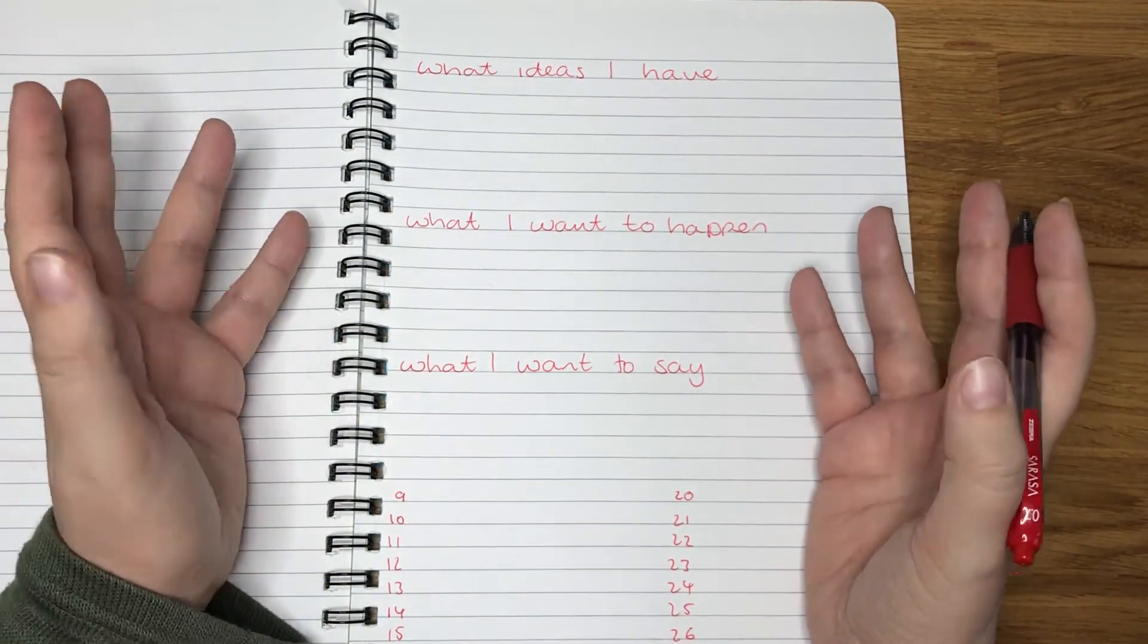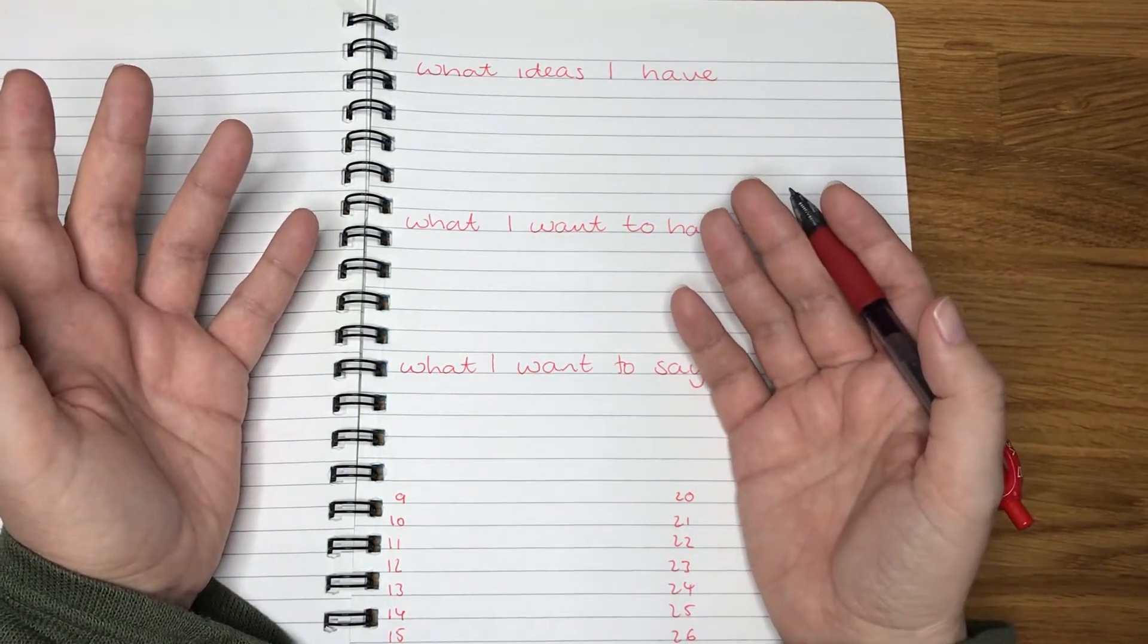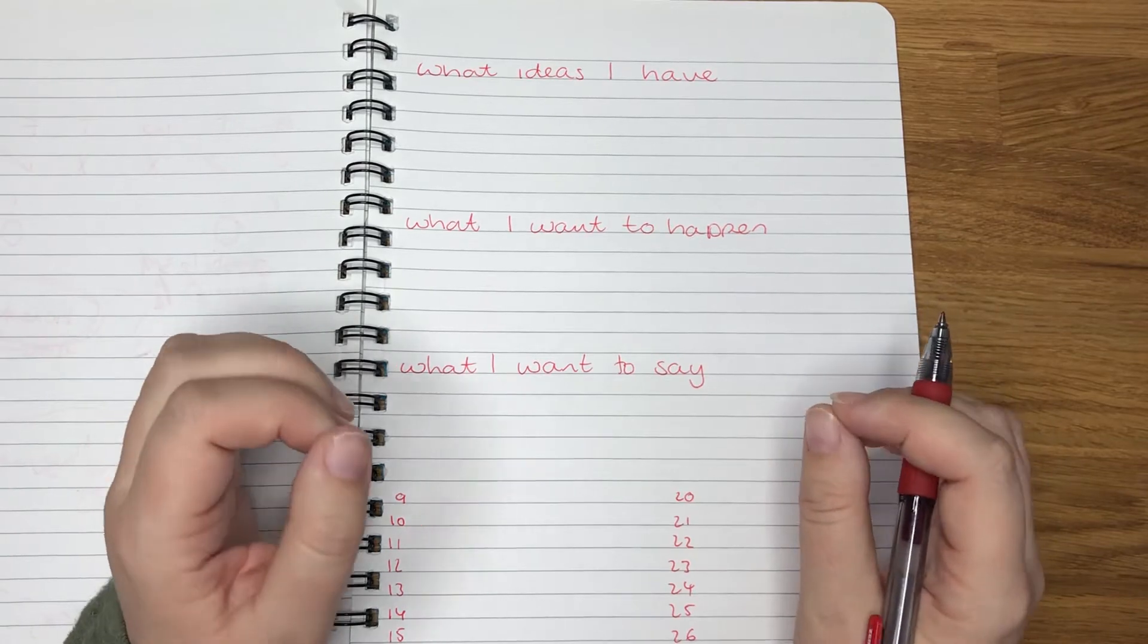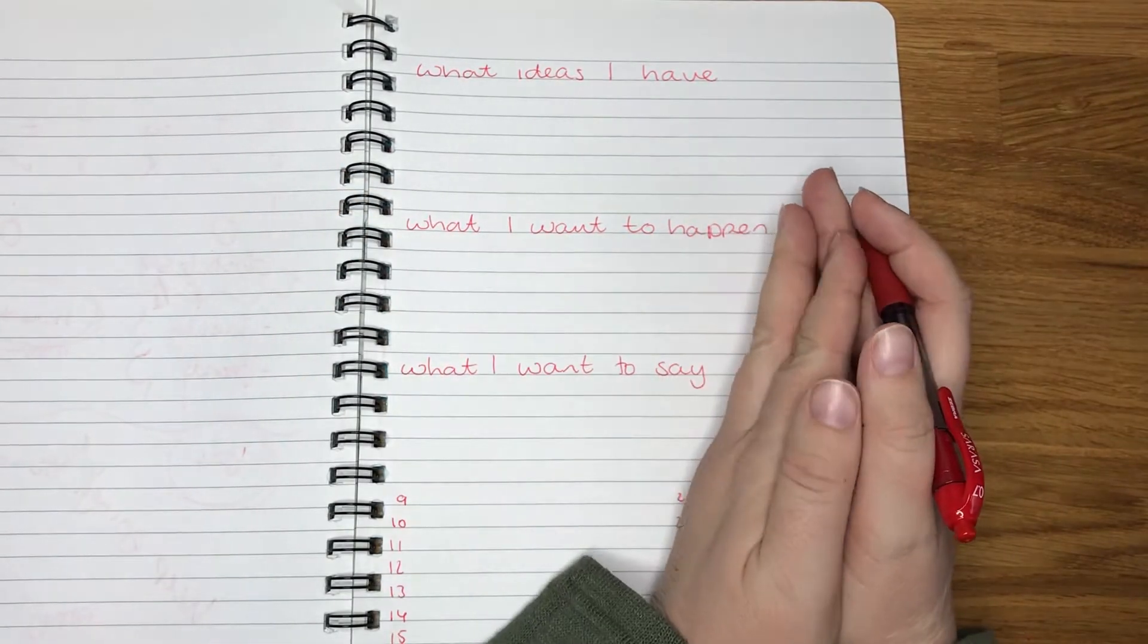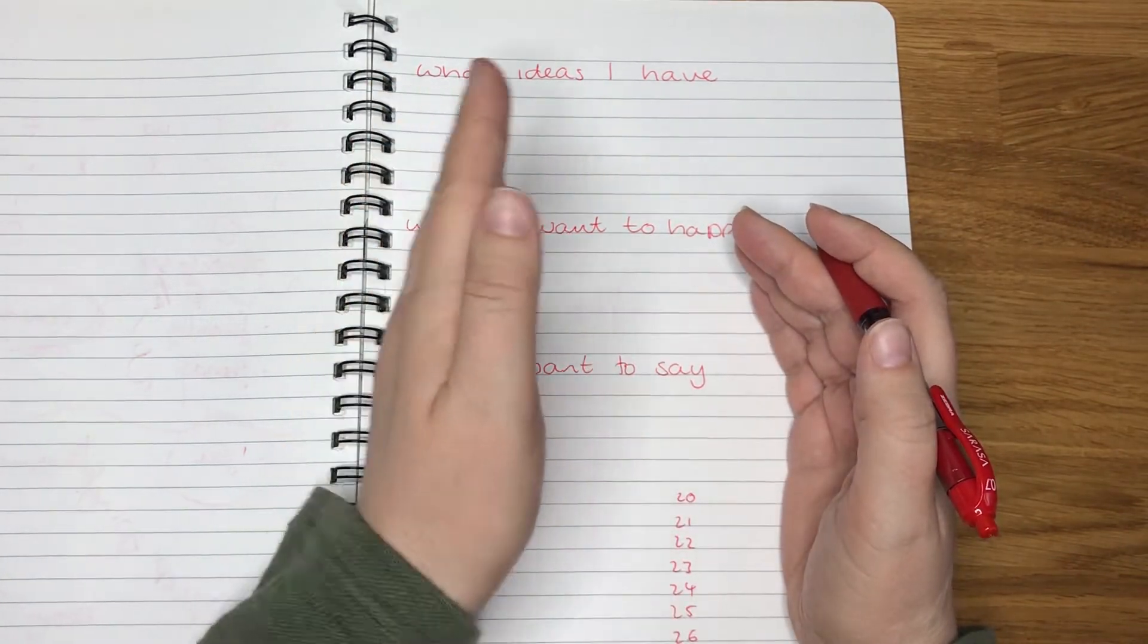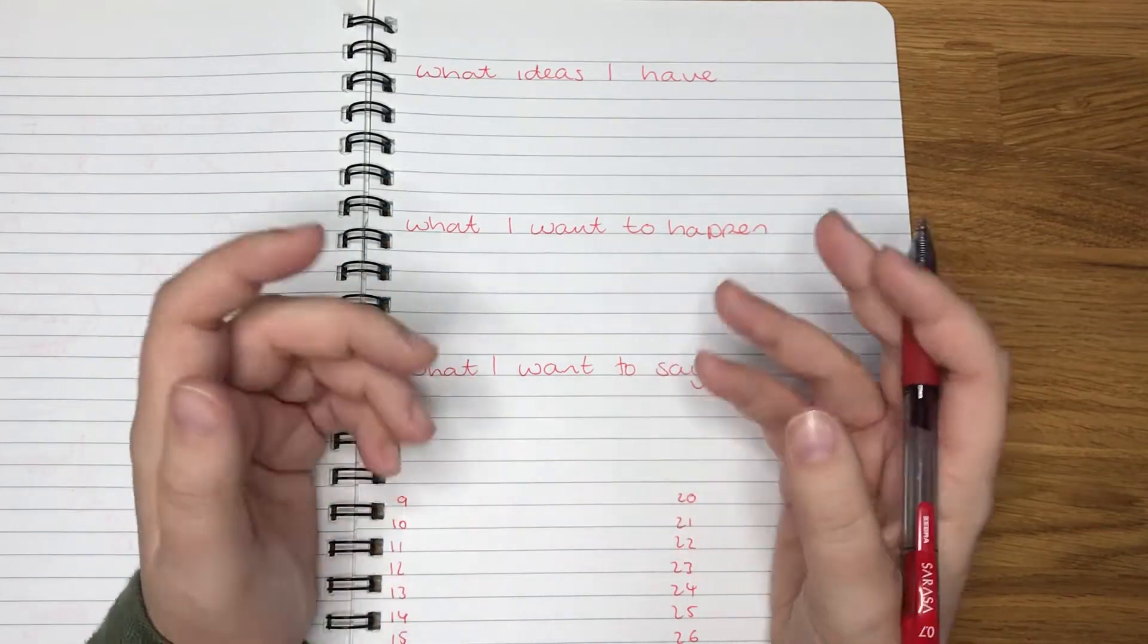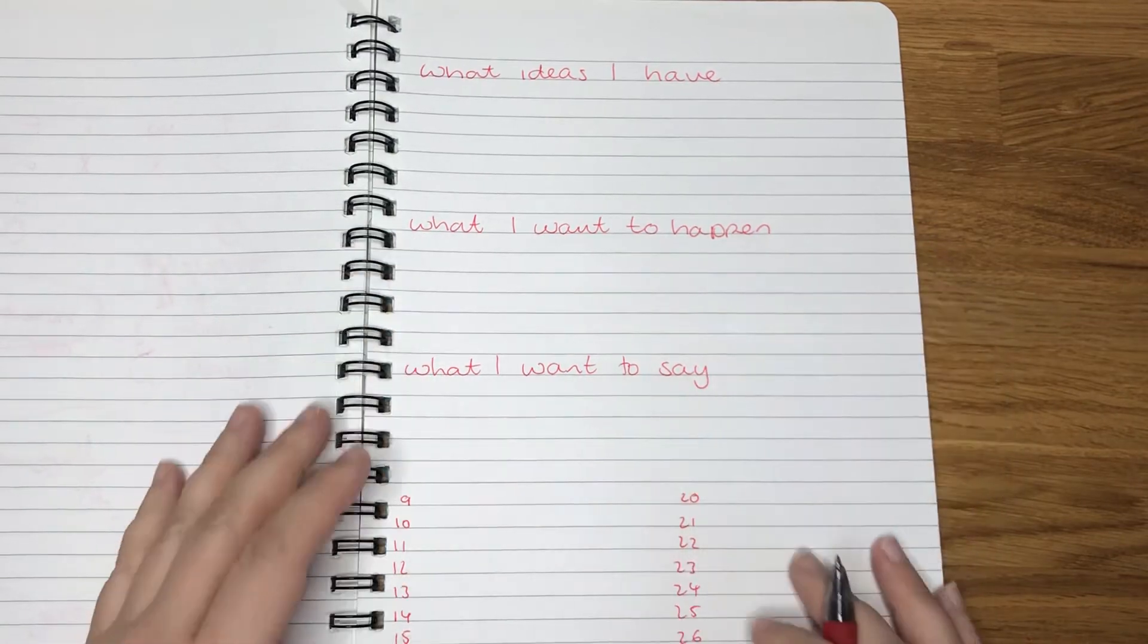Essentially, I kind of asked myself these questions: what ideas I have, and you just shove them down a page each really, and you just go for it. Then what I actually want to happen, what do I know? I know they start here, and I know at some point they get to this house, and I know the end. So I know some bits. I just not necessarily know how you get there, but I know some bits. And what I want to say, what I want the overall feeling of it to be, if that makes sense, what I'm trying to get across.